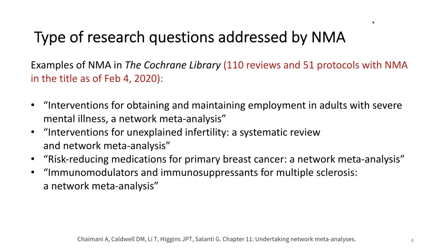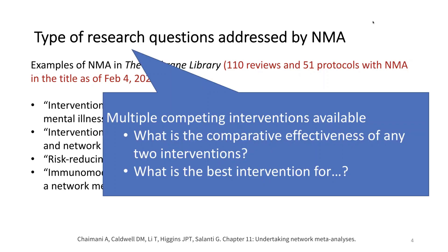When I searched in the Cochrane Library yesterday, I found 110 completed reviews and 51 protocols with network meta-analysis in the title. Here are some examples: interventions for obtaining and maintaining employment in adults, interventions for unexplained infertility, risk-reducing medications for primary breast cancer. What's in common across all these review titles is that there are multiple competing interventions available for a condition, and the authors are interested in knowing the comparative effectiveness of any two interventions or what is the best intervention for a given condition.